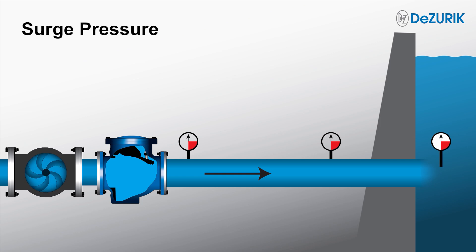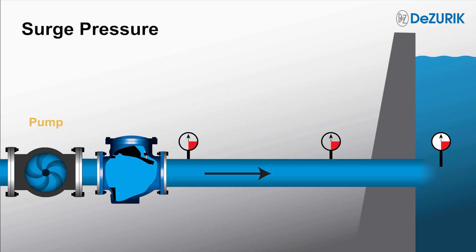During normal pump startup and shutdown. To understand surge wave travel, let's consider an example of a single pump, a simple level pipeline, a check valve, and a large reservoir. We will assume the reservoir is large enough that the fluid pumped into it will not cause a pressure change.